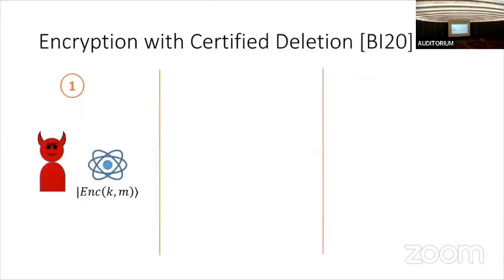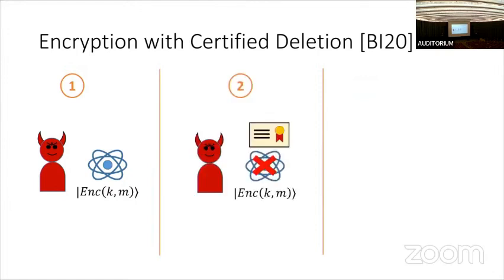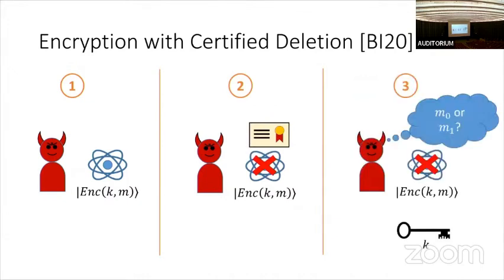To figure out a good definition, let's start by recalling the definition for encryption with certified deletion. The adversary starts with a quantum ciphertext, then deletes it by producing some valid certificate. Finally, it gets the key and tries to guess the message. It should not be able to do this, even if it's also given unbounded computational power at this step.